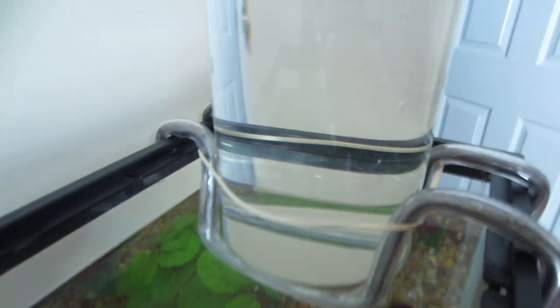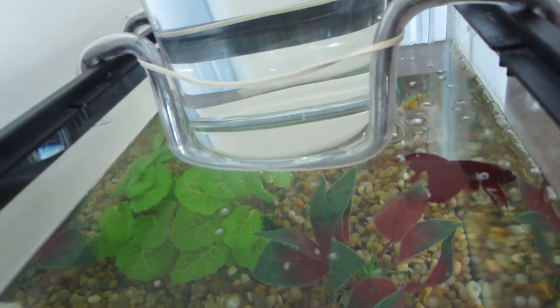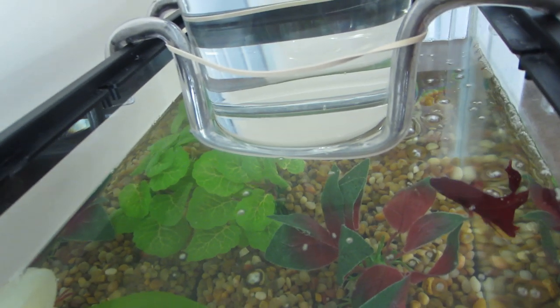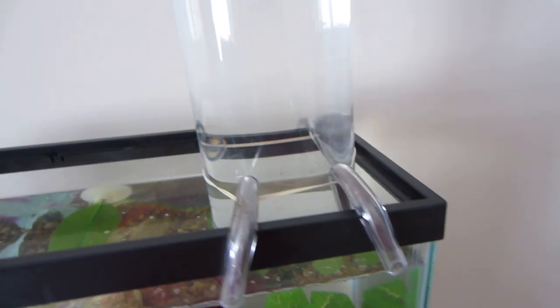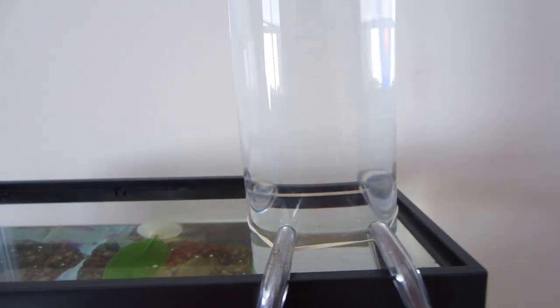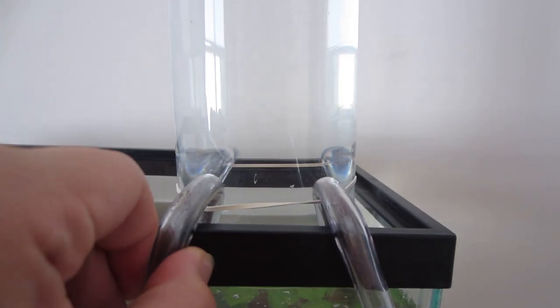So make sure that these two sides here, the ones that are right next to the vase, that they're snug so that the vase will not tip over. Make sure that these are snug so that it doesn't move.